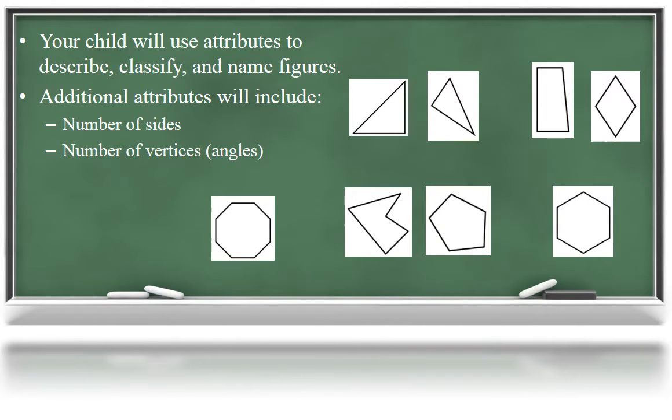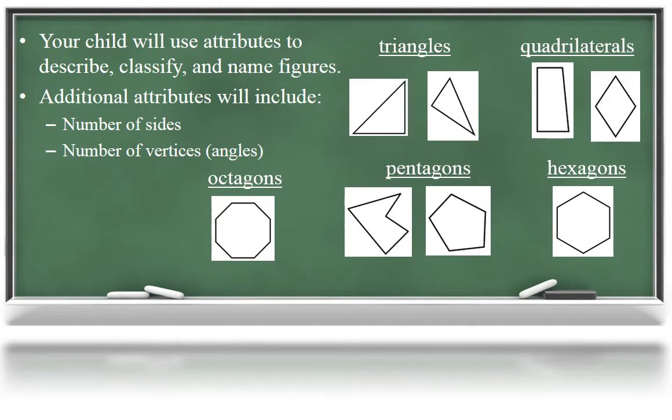Upon sorting, your child will learn that shapes sharing similar attributes fit into certain categories and have names. Polygons with three sides and three vertices are named triangles. Quadrilaterals have four sides and four vertices. Pentagons, hexagons, and octagons name polygons with five, six, and eight sides and vertices.